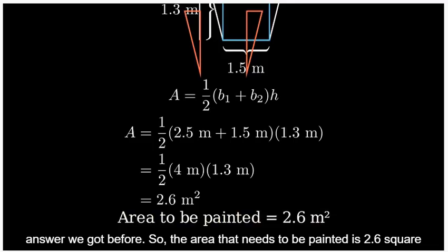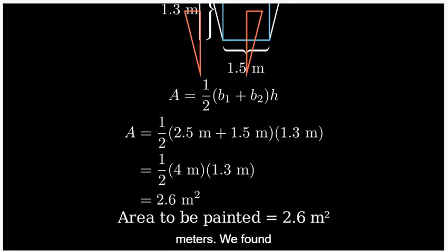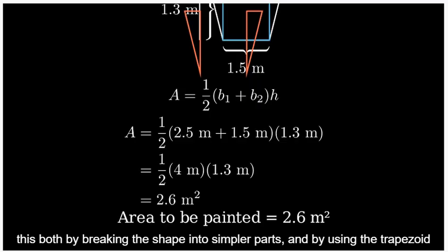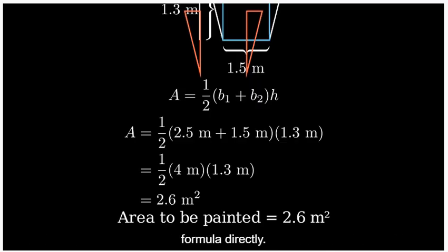So the area that needs to be painted is 2.6 square meters. We found this both by breaking the shape into simpler parts and by using the trapezoid formula directly.